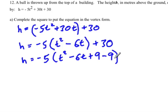Because plus 9 minus 9 is just 0, so if we were to simplify, we'd end up with what we have up here, plus 30.